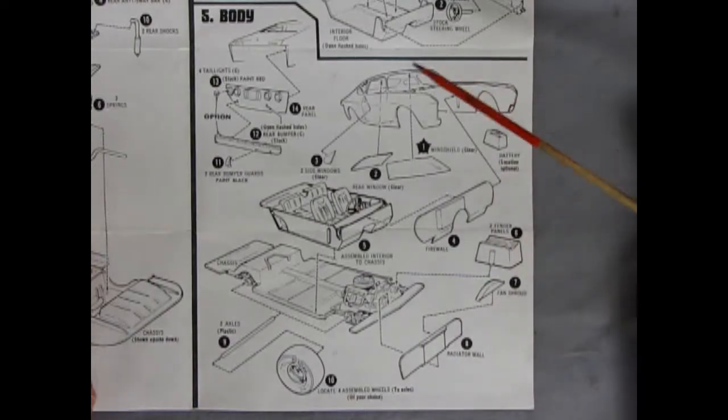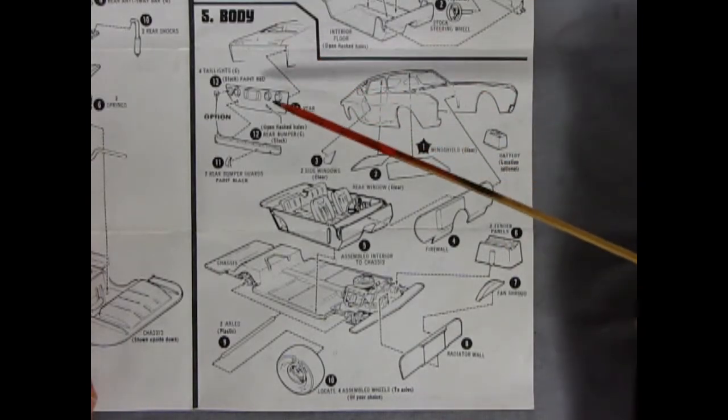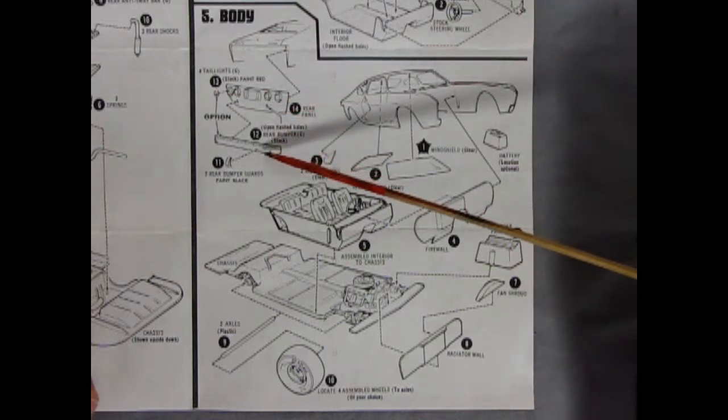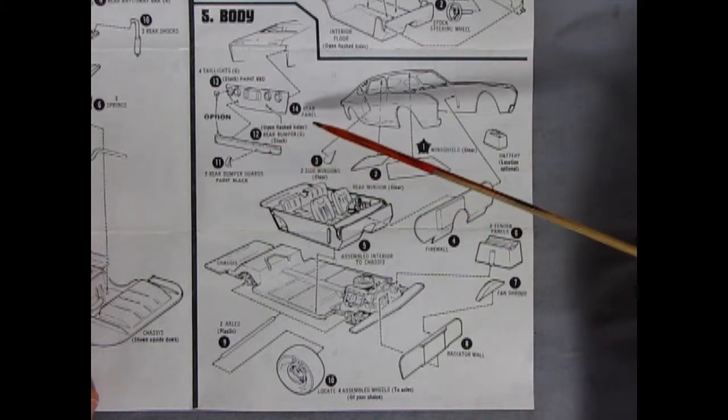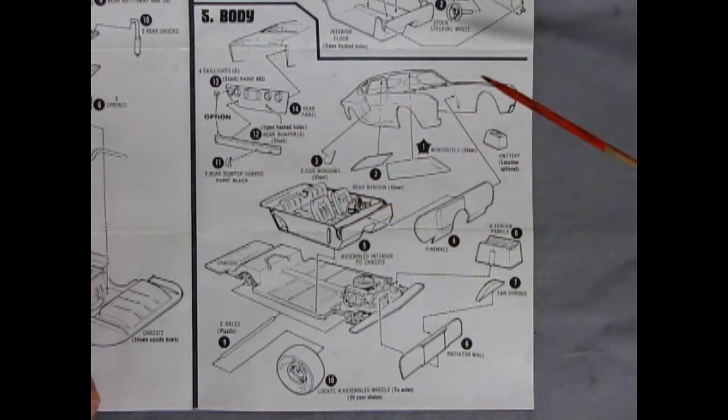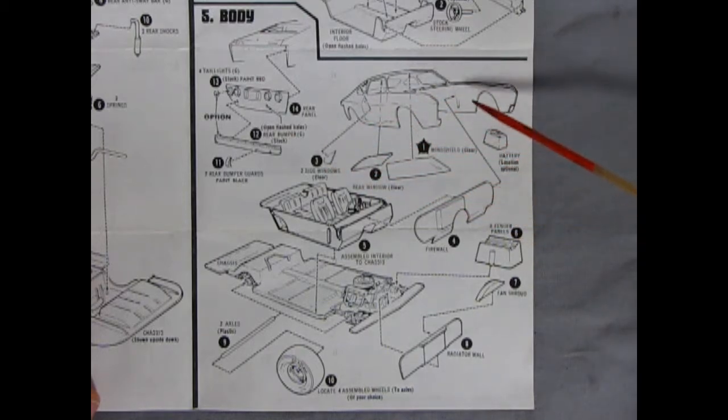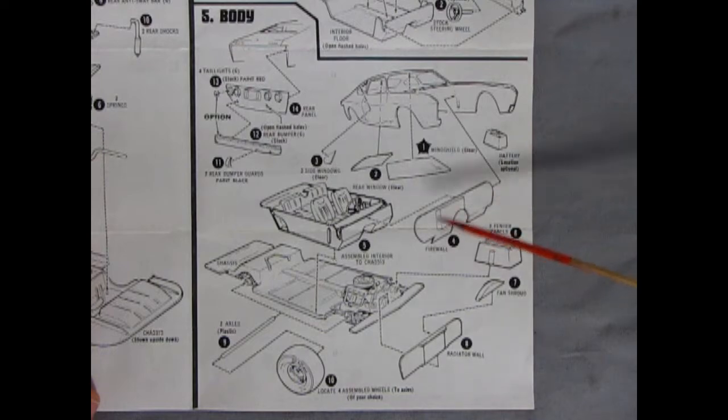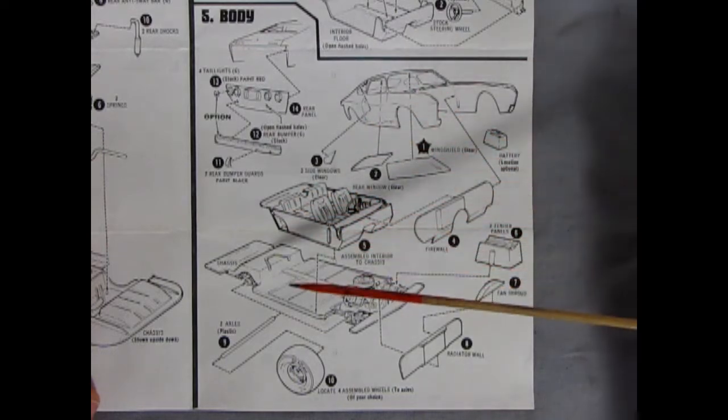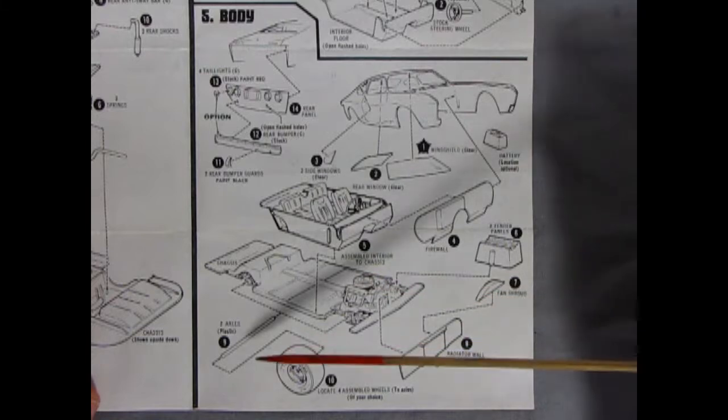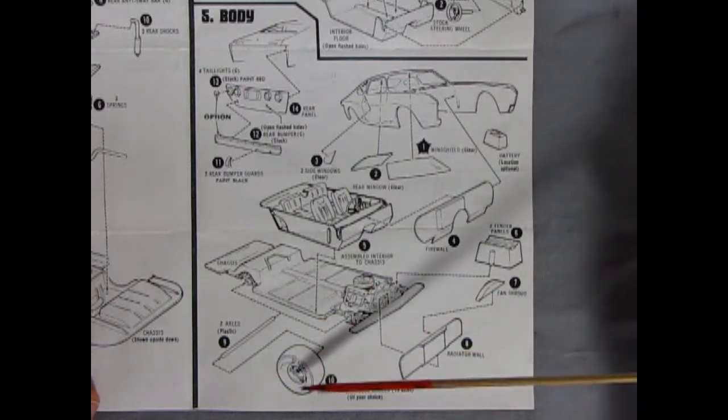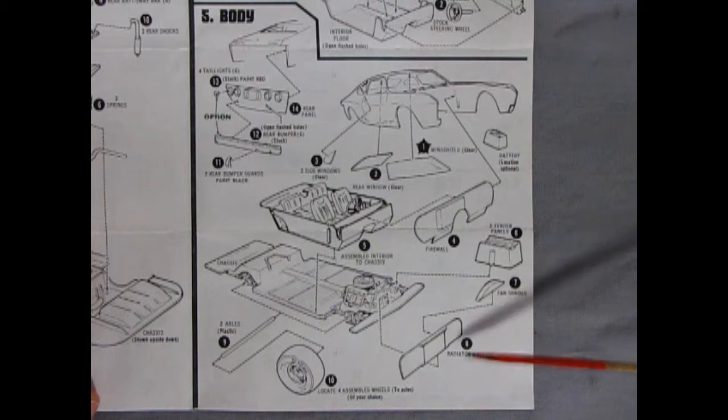Panel five shows our body going together and then here we have our body shell and the rear pan and our tail lights go inside. You do get the option of putting on the bumper or leaving it off and you also get bumper guards at the back. There's our body shell again with all the glass going in place, we have a battery which hooks in, there's our firewall. The interior completed will pop in underneath and then the chassis on the bottom. You do get metal axles in here and the wheels will go in there. Radiator, wall support, the fan shroud and two fender panels also go inside the car.